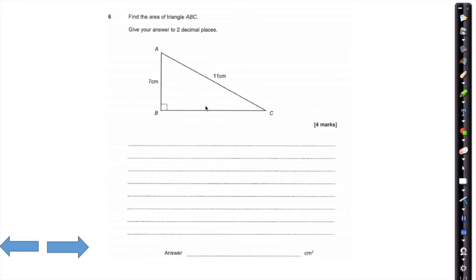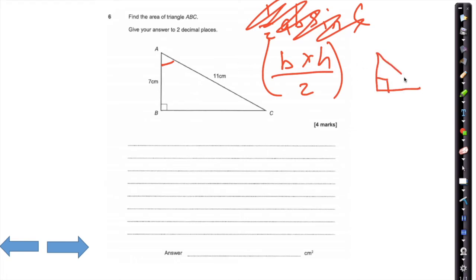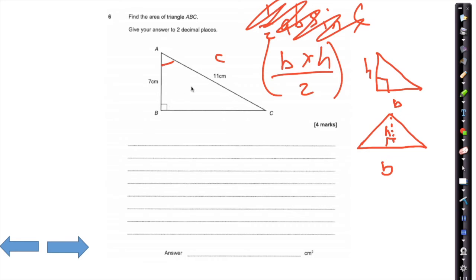This is a Pythagoras' theorem question. We have two formulas for the area of a triangle: half ab sin C, and base times height divided by 2. We don't have the angle C here, so we'll use base times height divided by 2. Using Pythagoras, C is opposite the right angle.